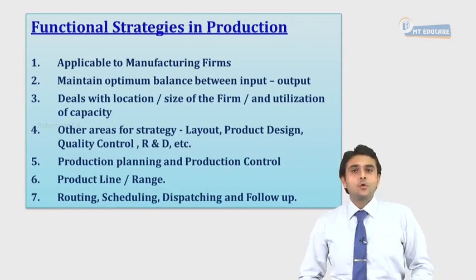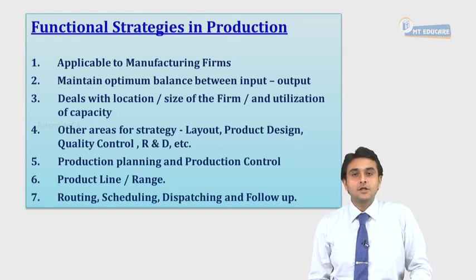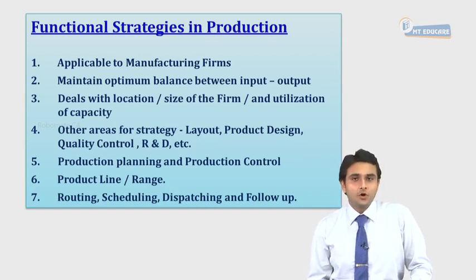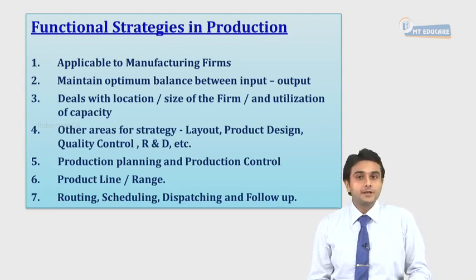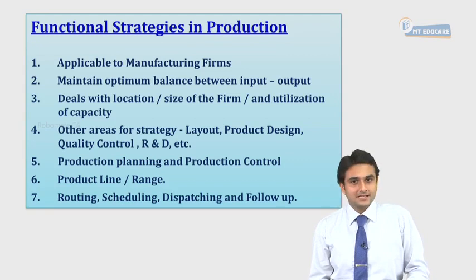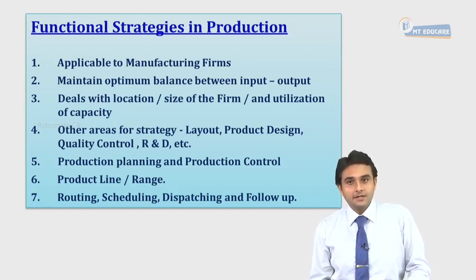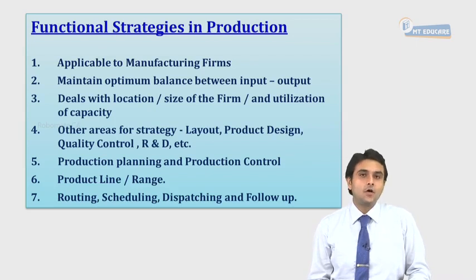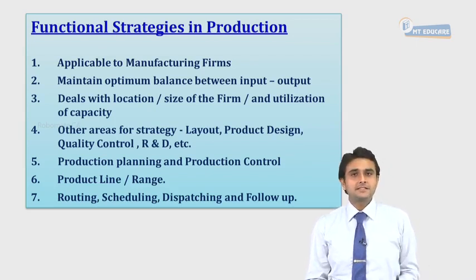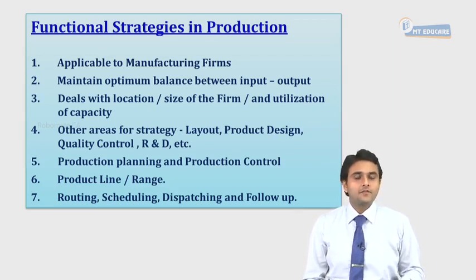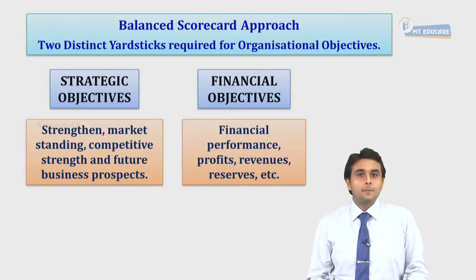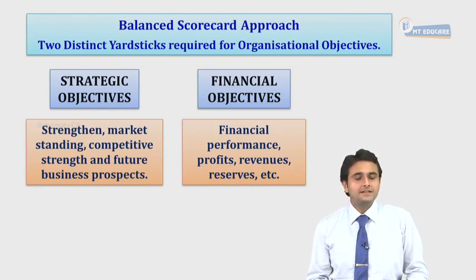A production strategy will involve two key things: logistics management and supply chain management. Production in simple words involves maintaining an optimum balance between inputs and outputs, full utilization of capacity, optimum utilization of raw materials, the right layout, product design, quality control, and research and development. It also covers coming up with a good product line, routing of raw materials, scheduling of operations, dispatching of goods, and follow-up thereafter. After formulating marketing, finance, and production strategies, a business needs to adopt a balanced scorecard approach.